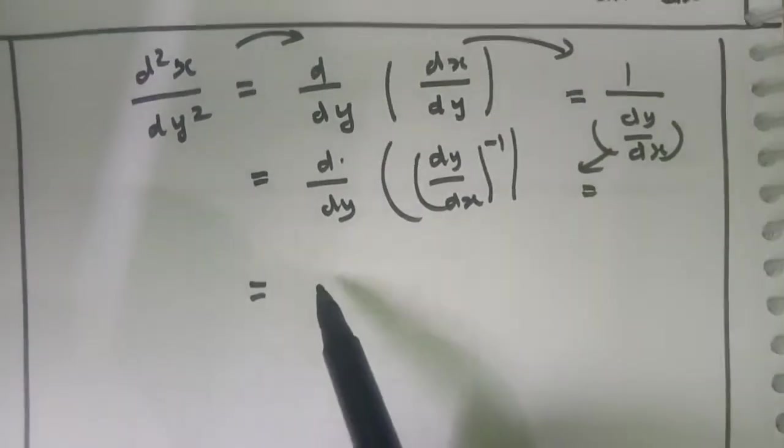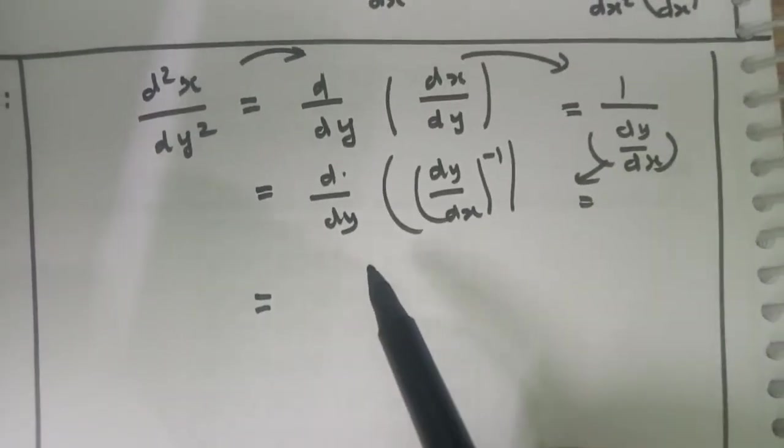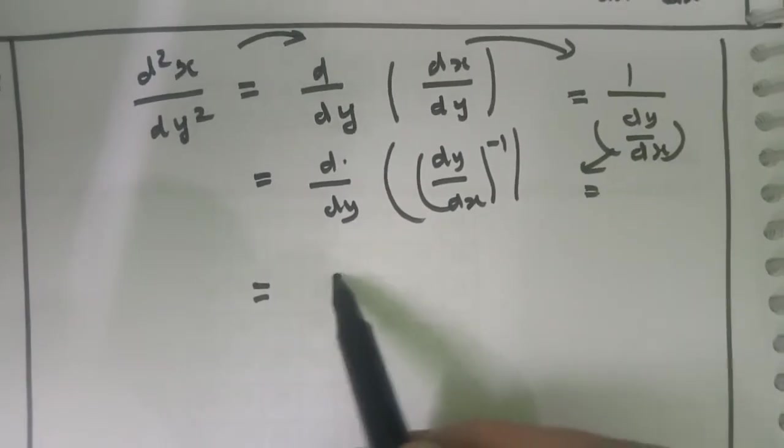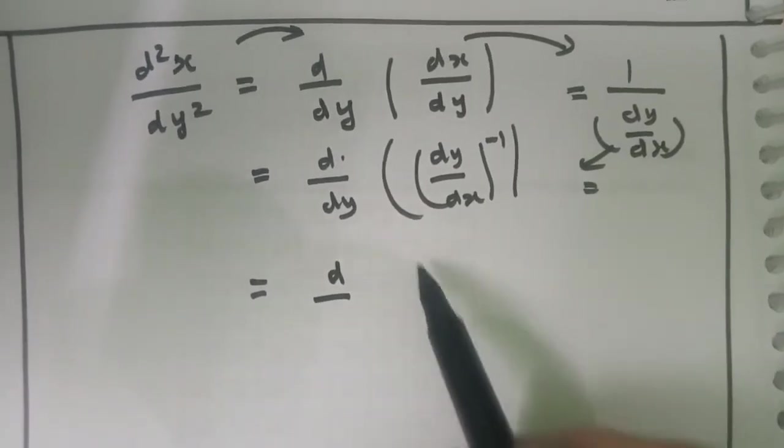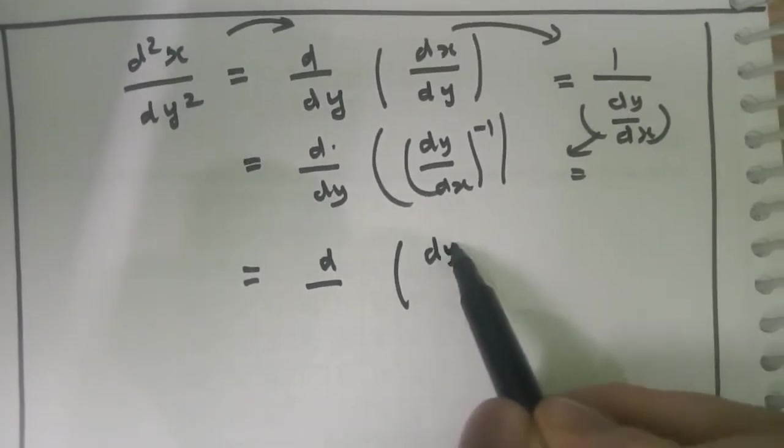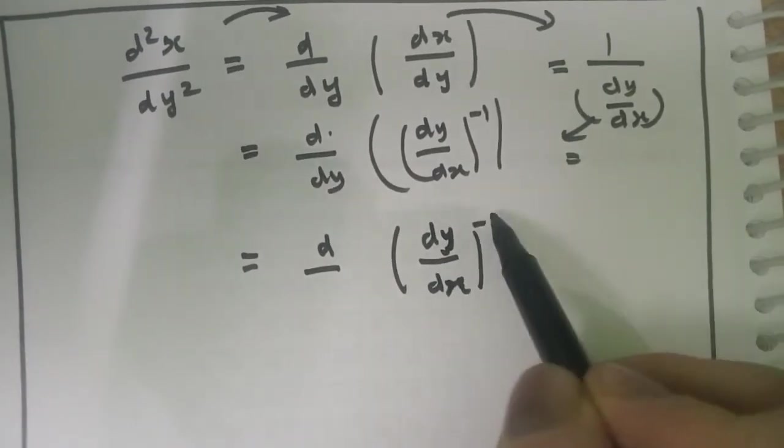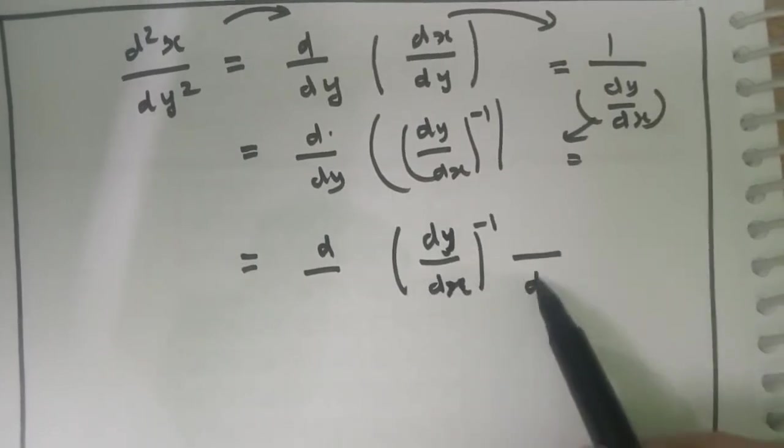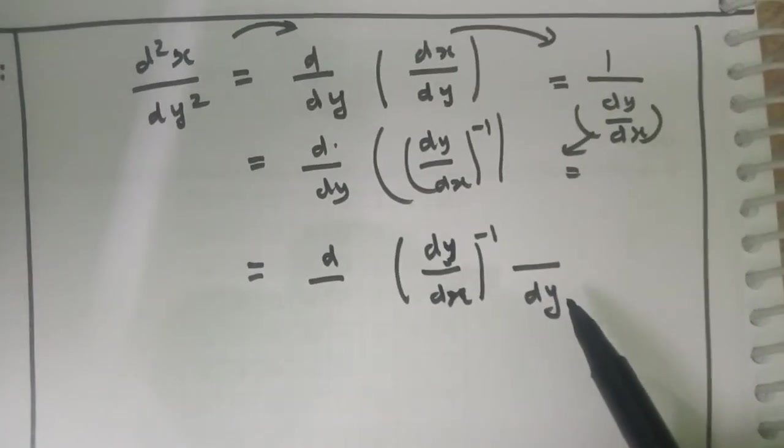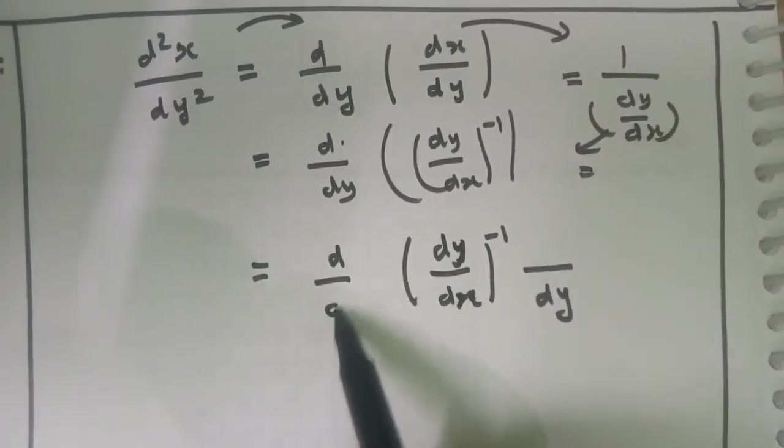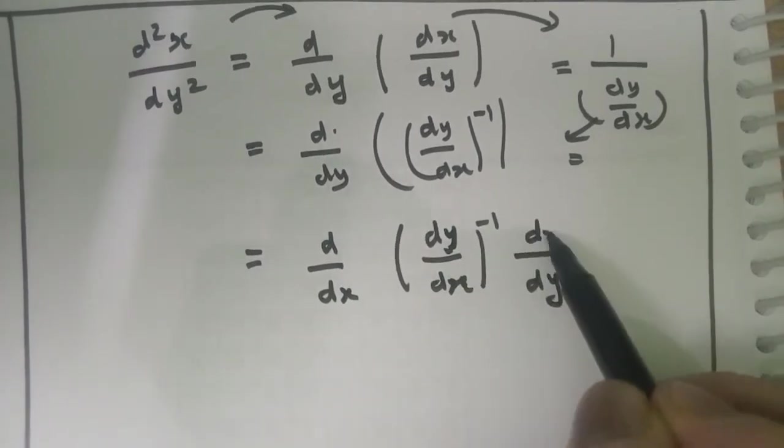Please carefully listen. Here we are going to apply chain rule. d/dy of dy/dx. As it is, we write in bracket (dy/dx)^(-1). Here we are going to apply chain rule multiplied by dx divided by dy.